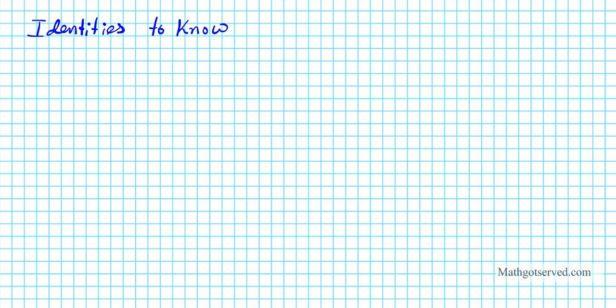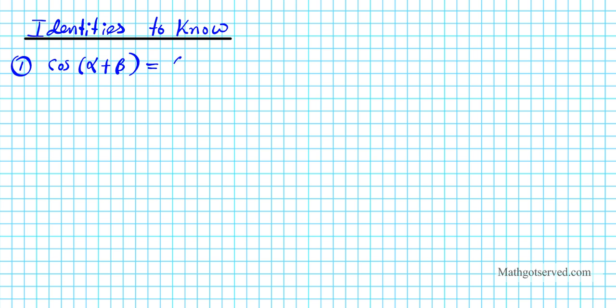Let's title this 'Identities to Know.' It's good to know all your identities, but these are the key ones that we need to have fresh in our minds in order to complete this proof. The first identity we need to know is the sum identity for cosine: cosine(α + β) equals cosine α cosine β minus sine α sine β.